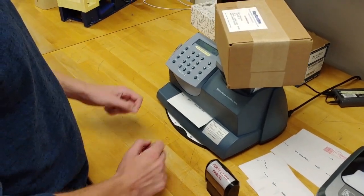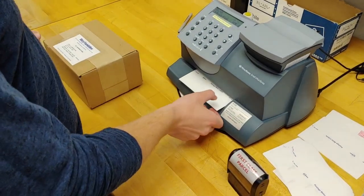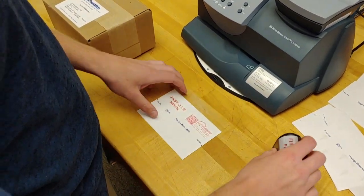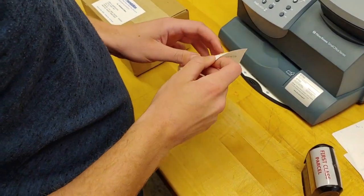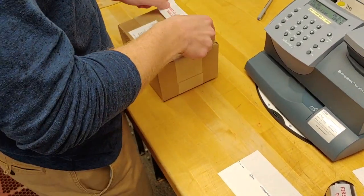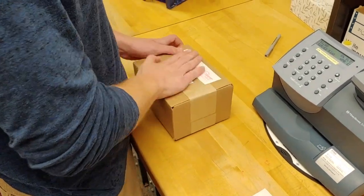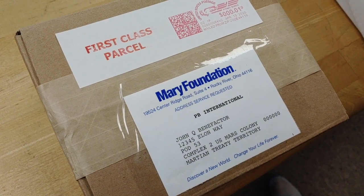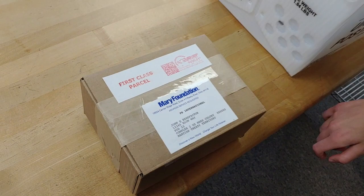A worker then prints postage for the shipment using a postal meter. He removes the adhesive label and carefully applies it to the package. The order is now ready for shipping.